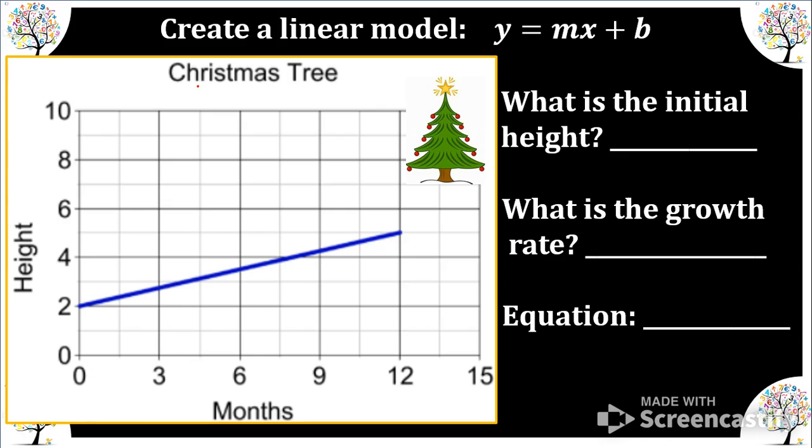So our first example we have, our topic is Christmas trees. We can see our x-axis represents months, and our y-axis is total height, so x is months and y is total height of the tree. So the initial height of our tree when it's planted at month zero is two feet tall. What is the growth rate?